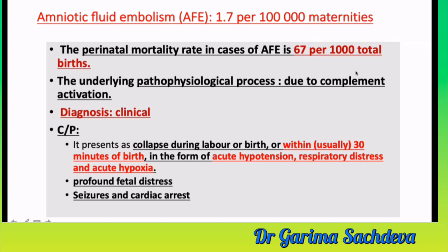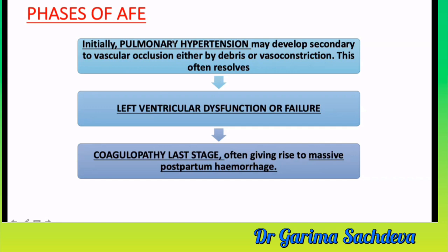Clinical findings of amniotic fluid embolism include acute hypotension, respiratory distress, acute hypoxia, profound fetal distress, seizures due to hypoxia, and cardiac arrest. There are various phases: initially pulmonary hypertension develops due to vascular occlusion by debris or vasoconstriction. If it fails to resolve, left ventricular dysfunction or failure results. In later stages, coagulopathy develops, often giving rise to massive postpartum hemorrhage.